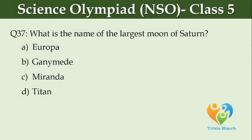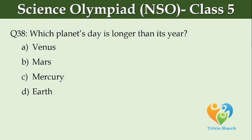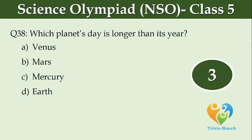What is the name of the largest moon of Saturn? Option A: Europa. Option B: Ganymede. Option C: Miranda. Option D: Titan. Which planet's day is longer than its year? Option A: Venus. Option B: Mars. Option C: Mercury. Option D: Earth.